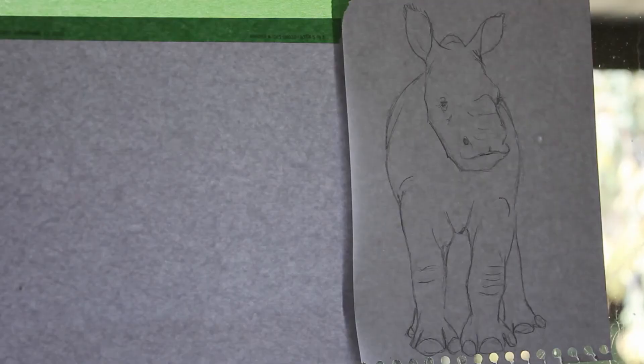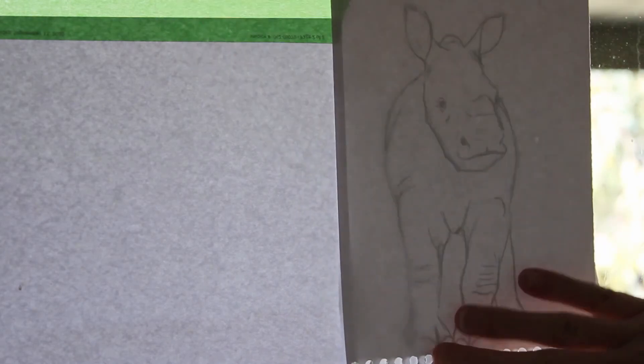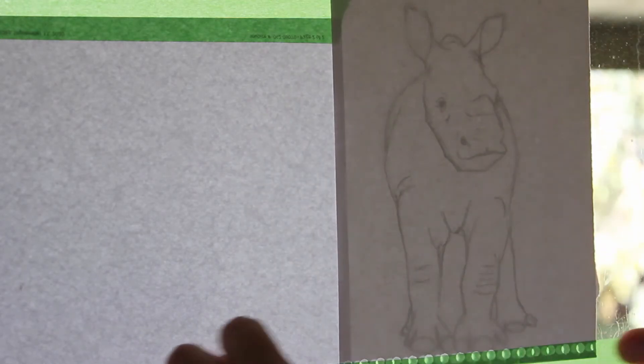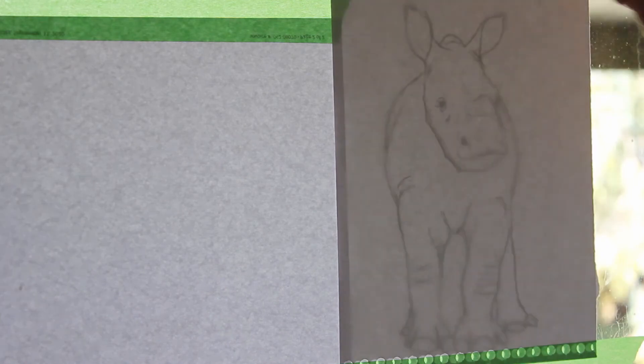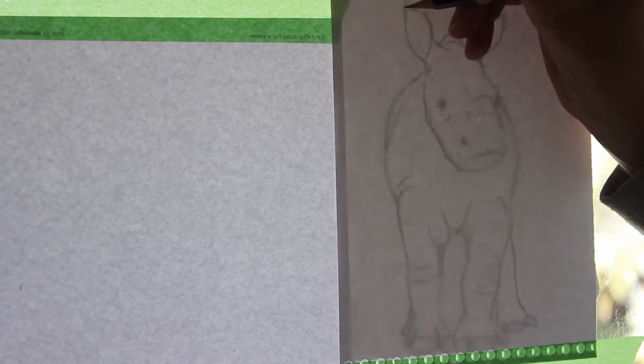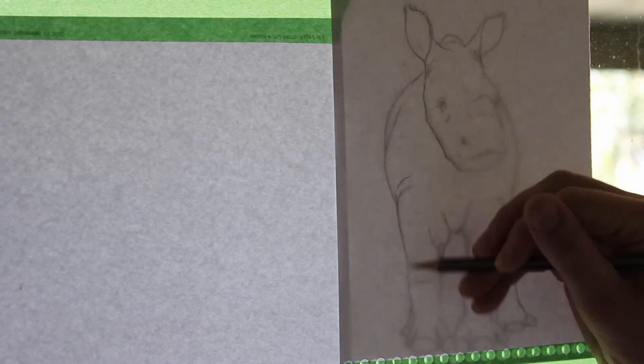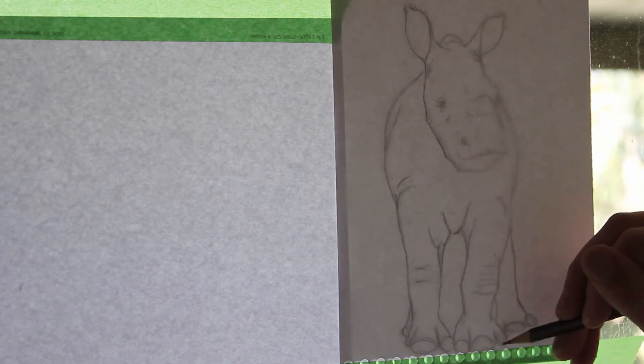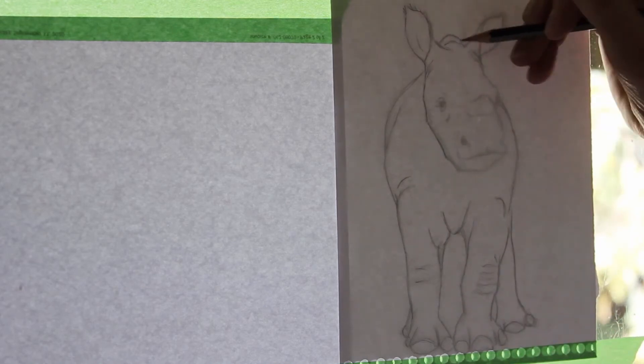The next method number three that I'm going to show you is a light box or window method if you don't have a light box. It's very easy. Ignore the piece of paper taped up on the left that was just there to block some extra light. Tape your sketch up on the window and tape your piece of paper over that sketch top and bottom to secure it down. It's easier if the light outside the window is very bright and your room is a bit darker then you can just trace over that sketch very easily. Now if you've got a light box fantastic it's so much easier but for years I used a window for tracing my sketches and it works wonderfully.